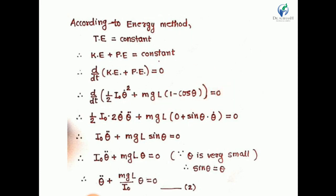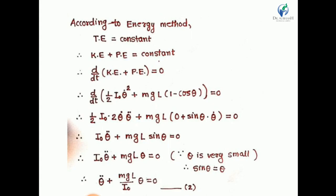Since ½·IO is constant, the differentiation of θ̇² is 2θ̇·θ̈. For the potential energy term, the differentiation of −cosθ is sinθ, multiplied by θ̇. Taking θ̇ as common and simplifying, we obtain IO·θ̈ + mgL·sinθ = 0. Since θ is very small, we replace sinθ with θ, giving IO·θ̈ + mgL·θ = 0.